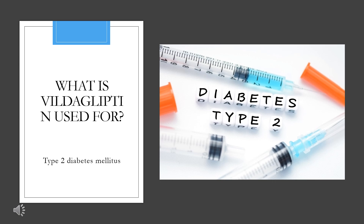Vildagliptin is also marketed in a combination product with metformin for the treatment of adults with type 2 diabetes mellitus who inadequately respond to either monotherapy of Vildagliptin or metformin. This fixed-dose formulation can be used in combination with a sulfonylurea or insulin — i.e., triple therapy — as an adjunct to diet and exercise in adults who do not achieve adequate glycemic control with monotherapy or dual therapy.